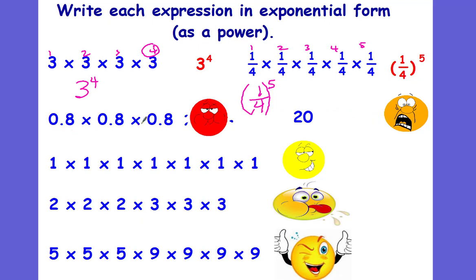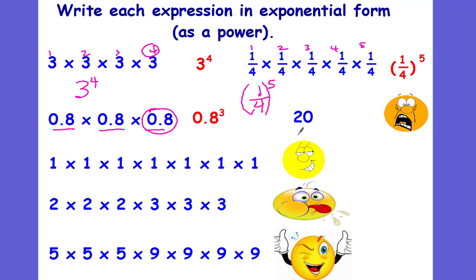Now we have 20. How many times is 20 being repeated? It's there one time — well, that's your exponent. This is 20 to the 1st power. We don't go around writing an exponent of 1, but know that any whole number's exponent is really the first power — it's the invisible first power.